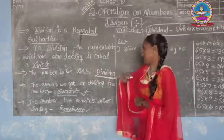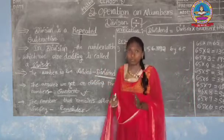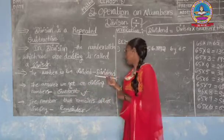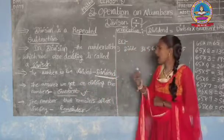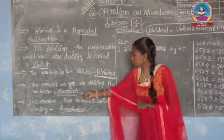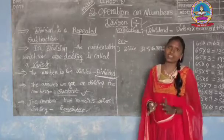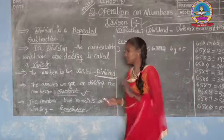The number to be divided is called dividend. What is quotient? The quotient is the answer.